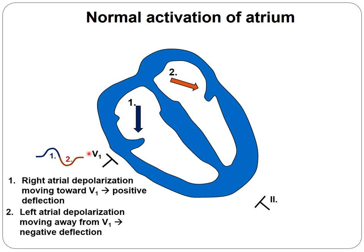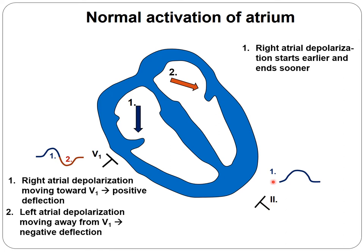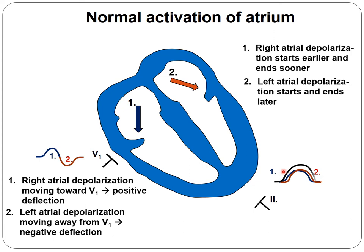When looking at lead II, the right atrium starts earlier and because this depolarization wave goes toward the electrode, we detect a positive deflection — a round positive deflection. The left atrium starts a little bit later and ends a little bit later. What we see is the sum of these two depolarization waves. The duration should not be bigger than 0.1 second and the amplitude should not be bigger than two and a half millimeters.